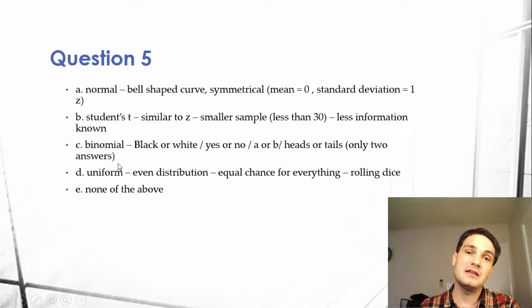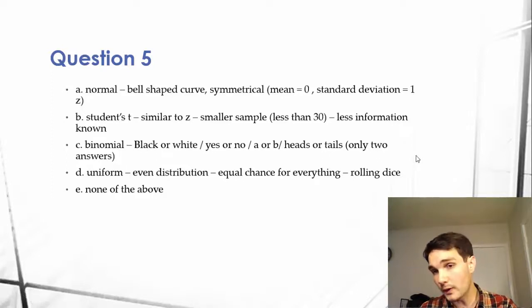Uniform means there's an even distribution of chances of something happening. So there's an equal chance for everything. So if you have a six-sided die, you roll it. There's an equal chance of getting every single number if it's a fair die. So that's a good example of a uniform distribution.